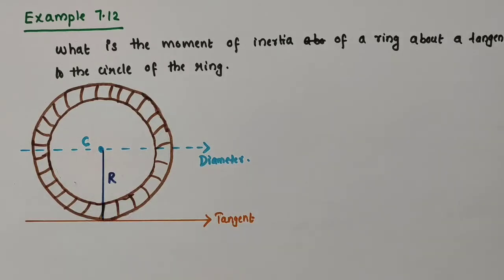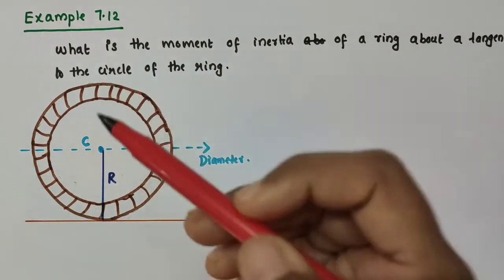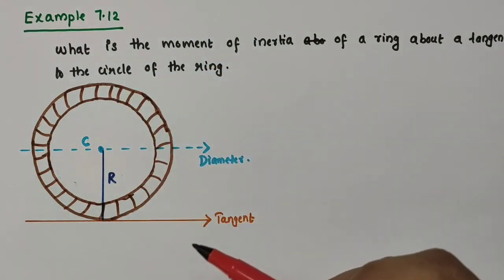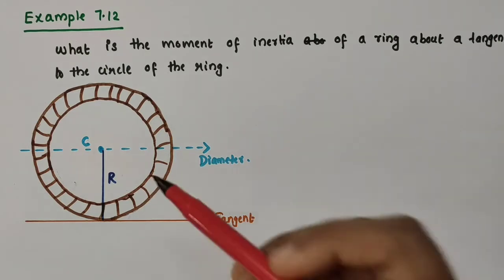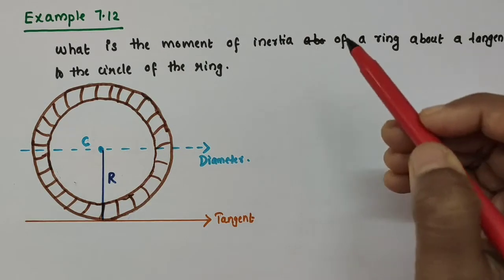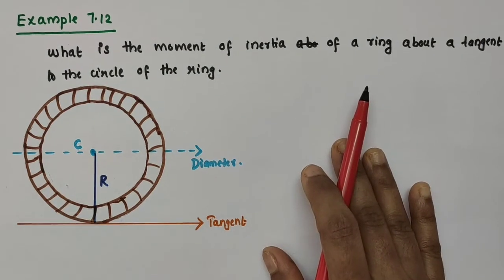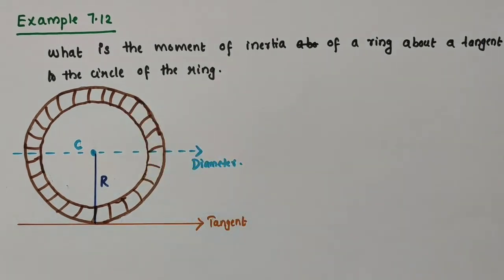Hello everyone. In this video we are going to discuss example 7.12 from chapter 7, Systems of Particles and Rotational Motion of class 11 physics. The question is: what is the moment of inertia of a ring about a tangent to the circle of the ring?